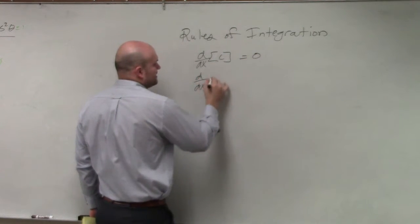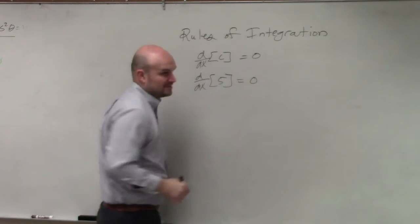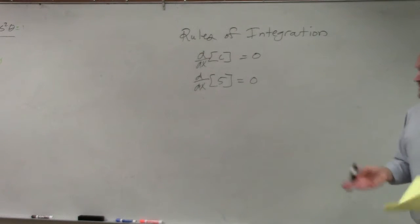So for instance, what I was talking about is d/dx of the number 5. We know that that is going to equal 0, right? Remember, taking the derivative of any constant is going to equal 0.